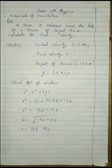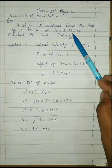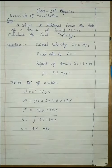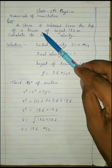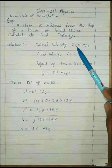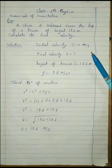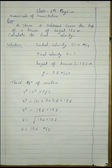First question: A stone is released from the top of a tower of height 19.6 meters. Calculate its final velocity. The stone is released from the top of a tower, which means initial velocity becomes zero, because when an object starts its journey from rest, the initial velocity is zero.